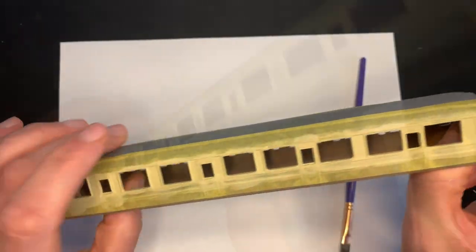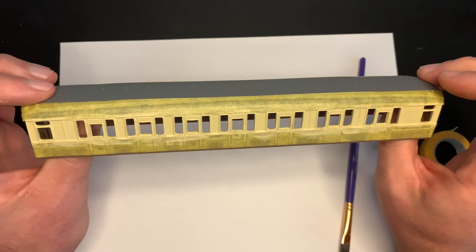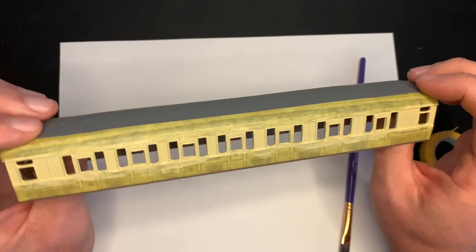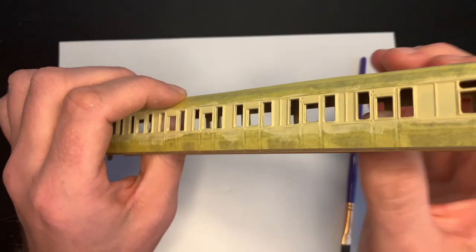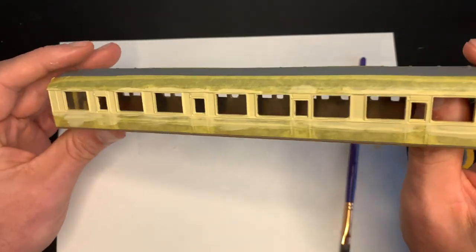So all I've done is given it several very thin coats and just built it up because I didn't want to lose all the detail, as much as I could anyway. Obviously I'm doing it by hand so I've just given it lots of very thin coats and I've tried to get into all of the window frames with those thin coats.